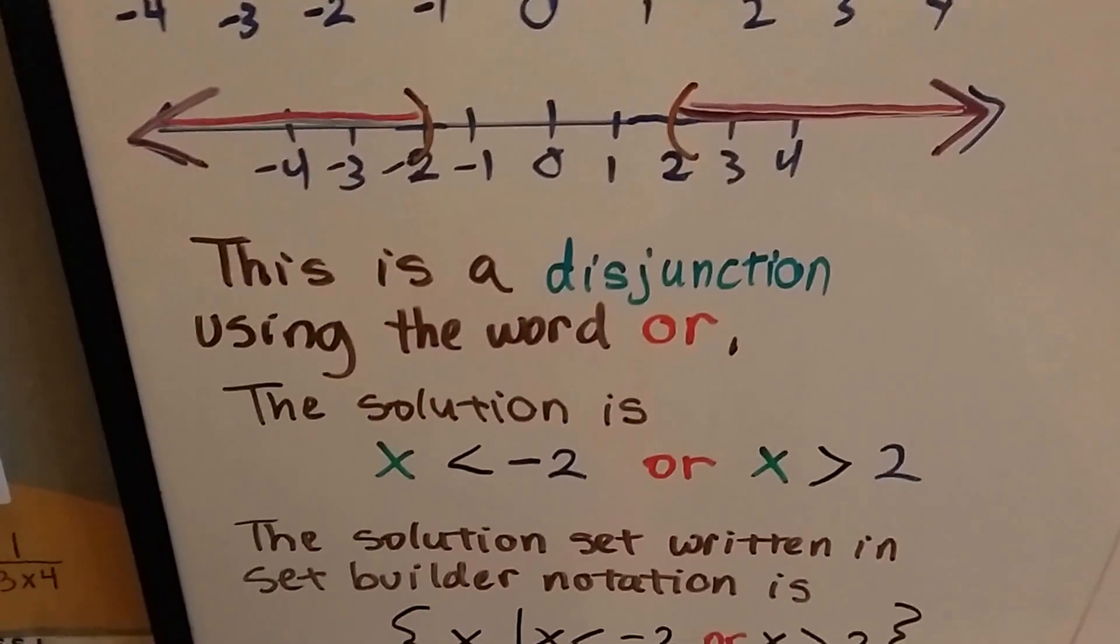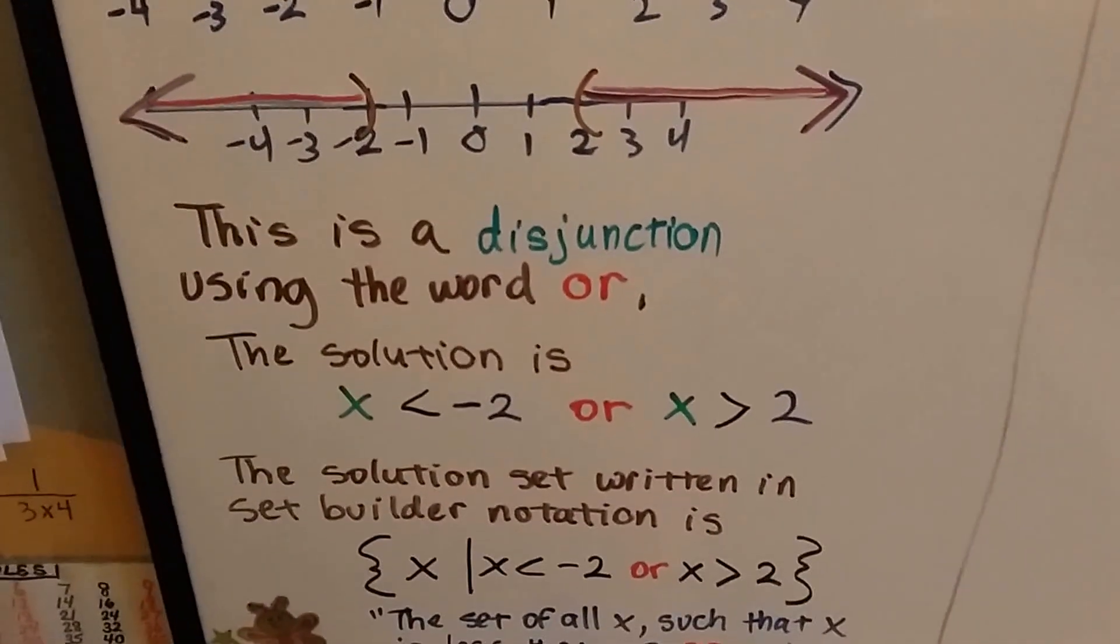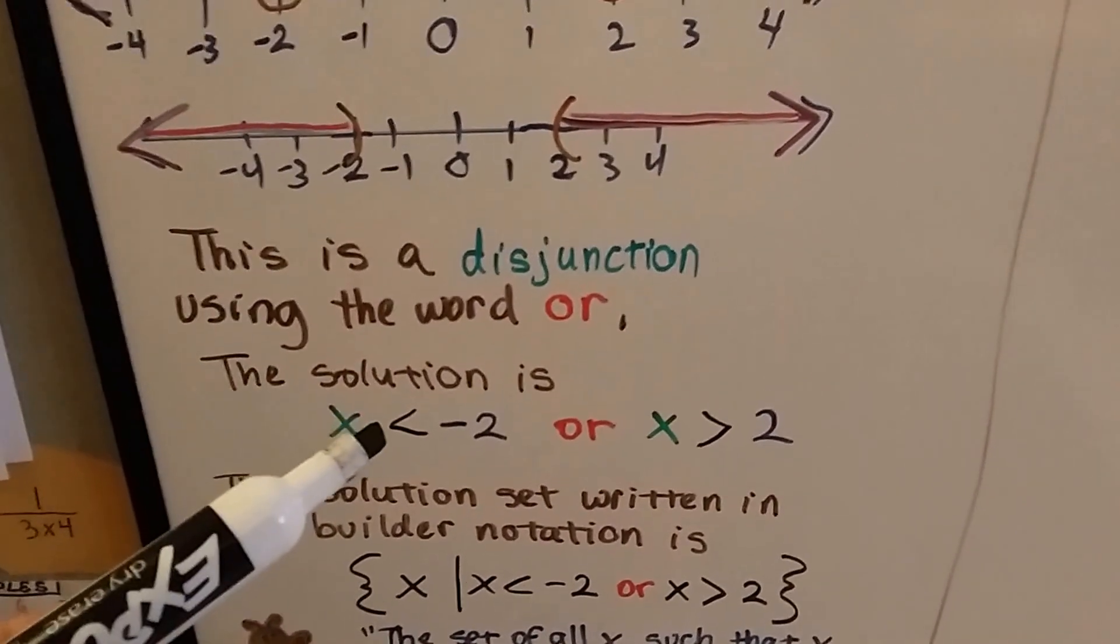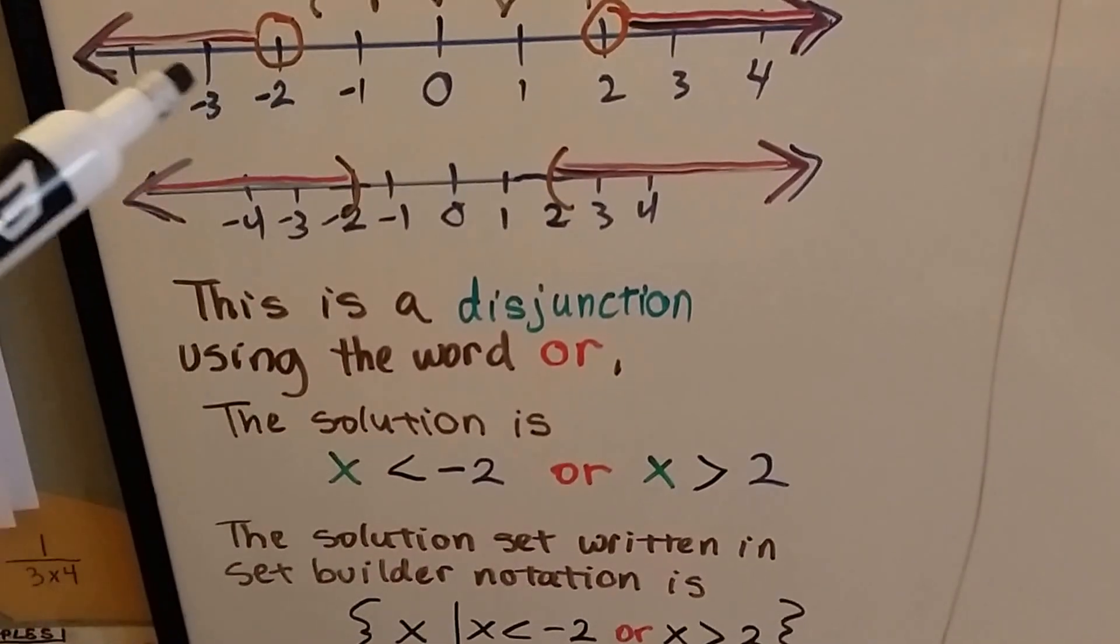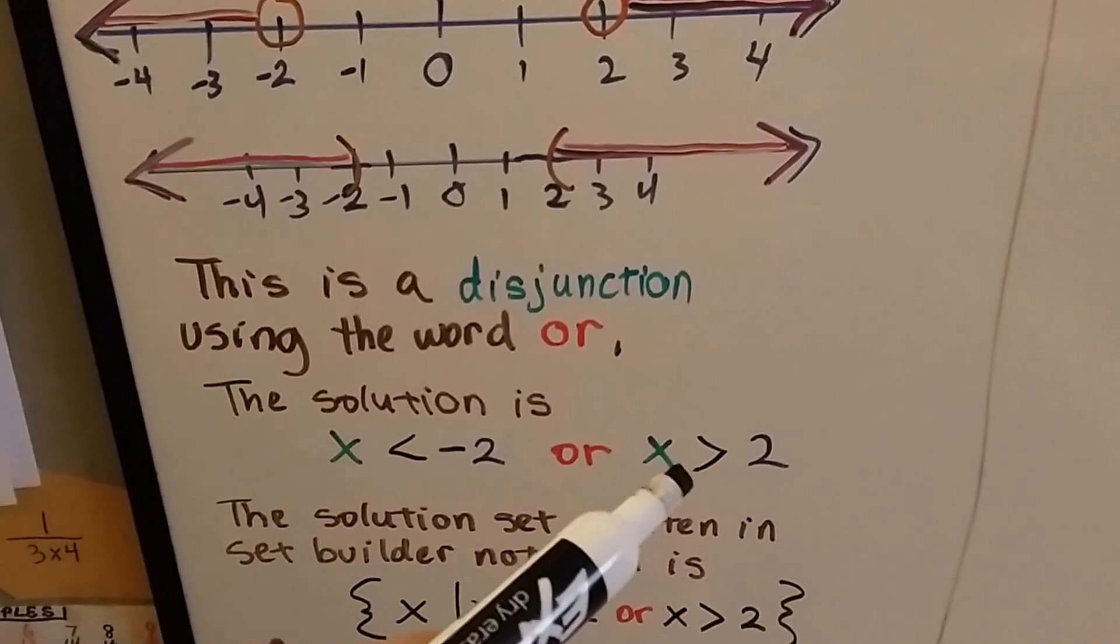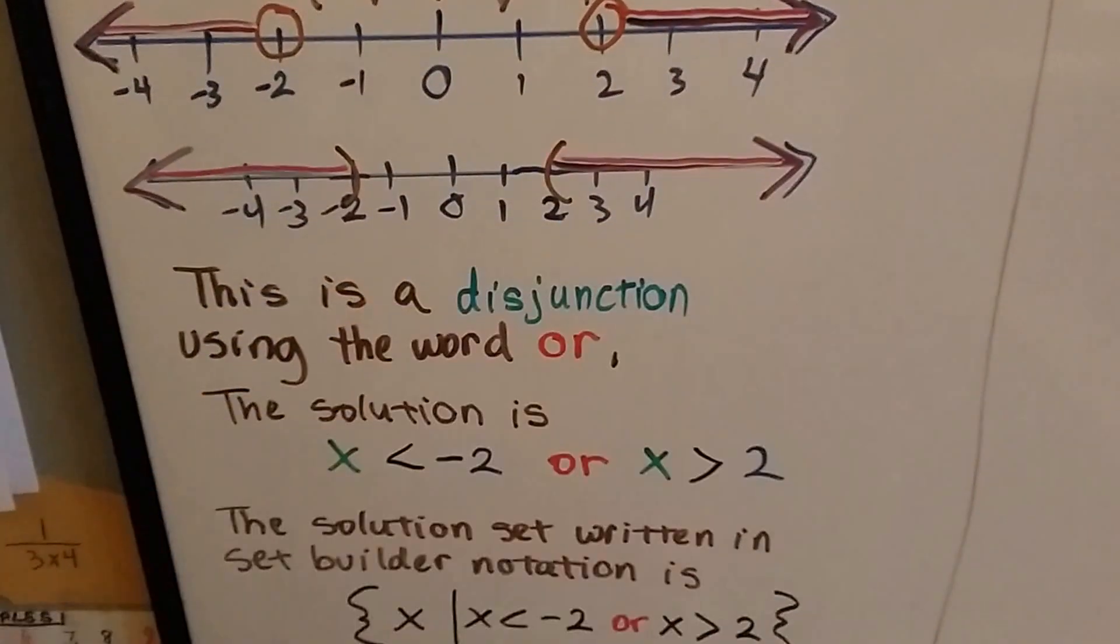So this is a disjunction. We're using the word or, and the solution is that x is less than negative 2 because it's going farther into the negative, or it's greater than 2 because we're going farther into the positive.